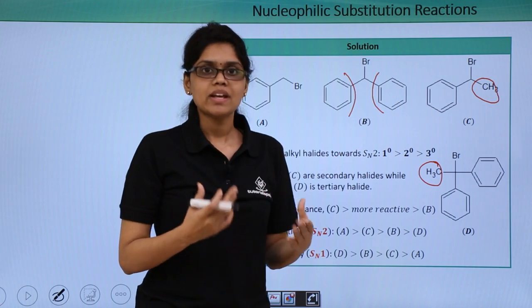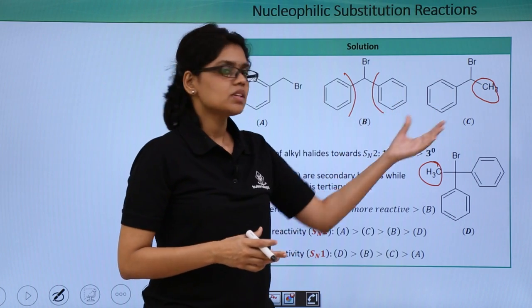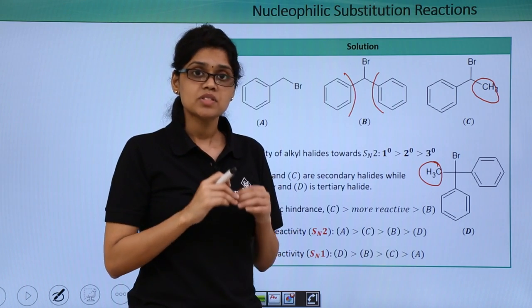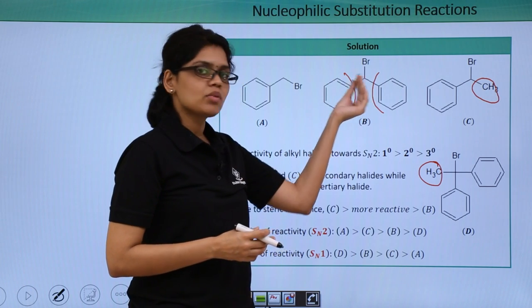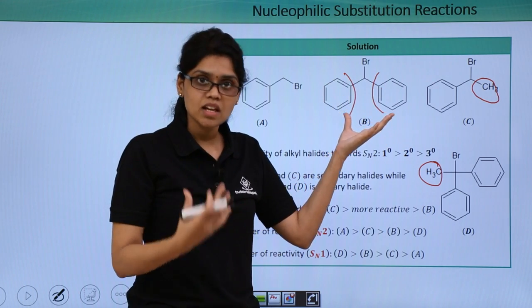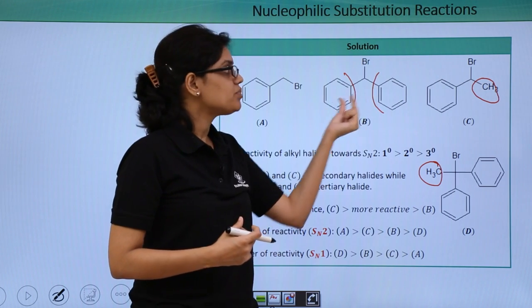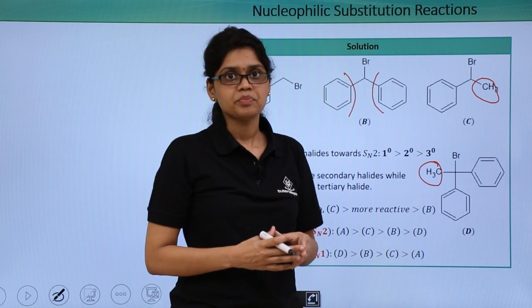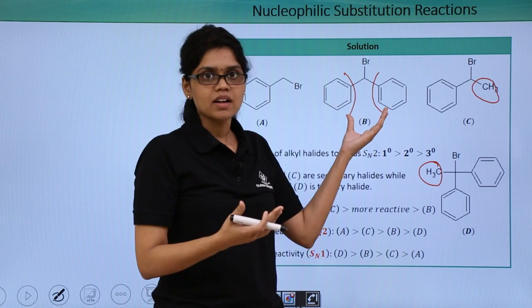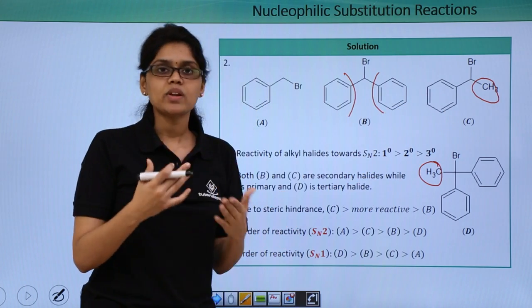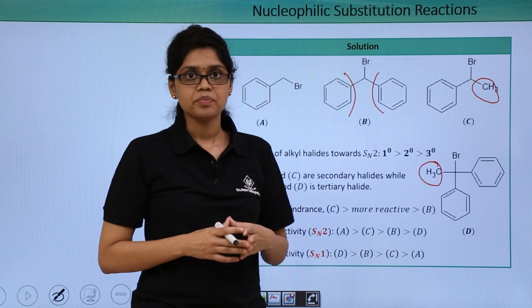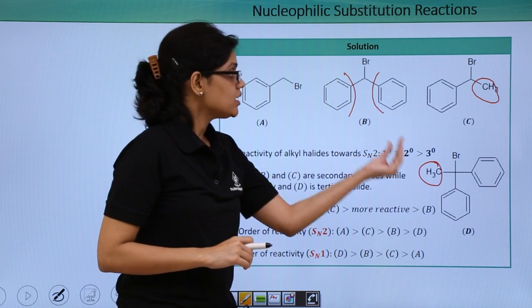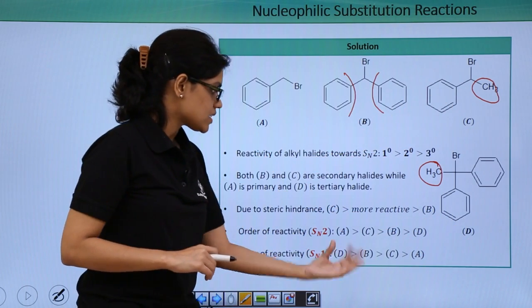Now, between the two secondary alkyl halides B and C, that compound will be more reactive towards SN1 which forms a more stable carbocation. The carbocation formed from compound B is highly stable because it is stabilized by resonance via two phenyl rings. However, in compound C the carbocation is stabilized by resonance through only one phenyl ring. Therefore, since B has a more stable carbocation than C, B will be much more reactive towards SN1 than C. The final order of reactivity towards SN1 reaction is: D > B > C > A.